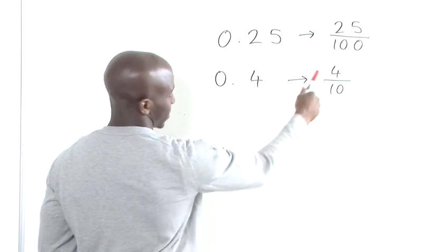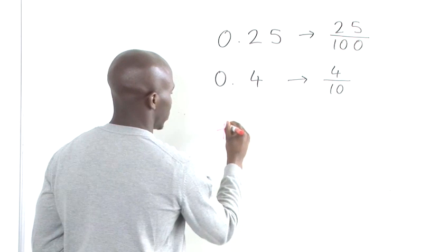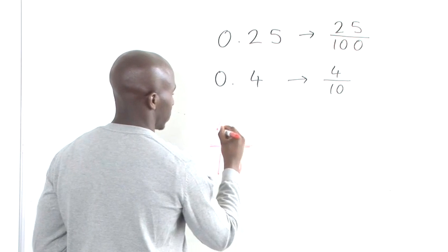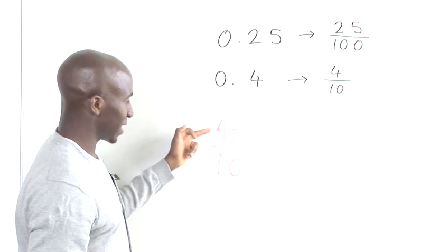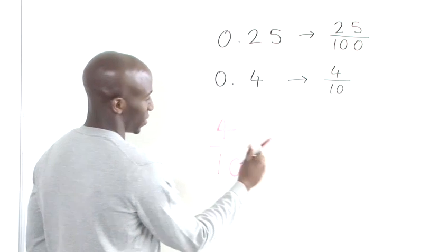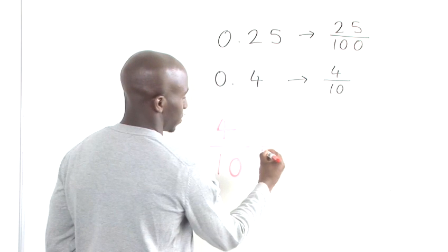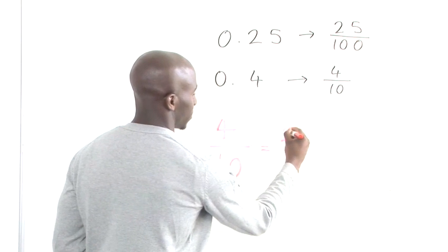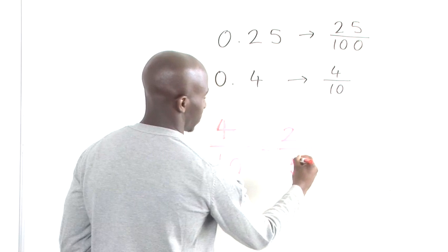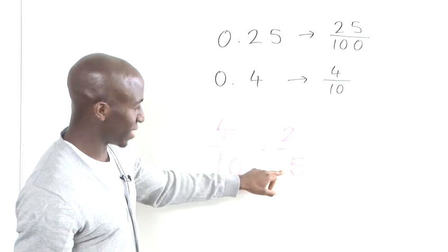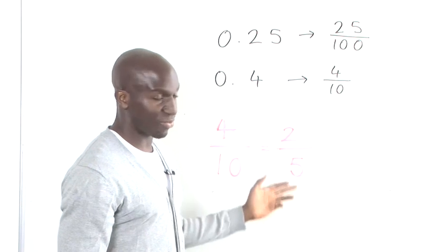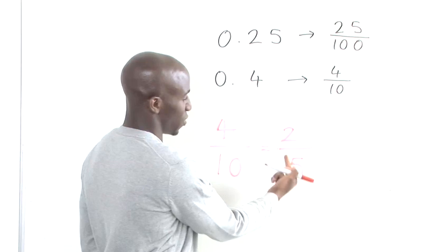Now for 4 divided by 10, we take the first prime number that divides both 4 and 10, which is 2. Dividing 4 by 2 gives us 2, and 10 divided by 2 gives us 5. Since 2 and 5 are prime numbers, we can't simplify any further. So 4 tenths is equal to 2 fifths.